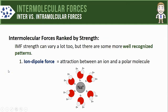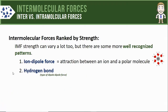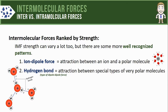Ion-dipole force is the attraction between an ion — like the Na⁺ cation shown here — and polar molecules, like the polar water molecules surrounding it. Next strongest, we have hydrogen bonds. Hydrogen bonds are actually a subcategory of another type of intermolecular force called a dipole-dipole force. They get their own special title because these are attractions between very special types of extremely polar molecules. When water molecules attach to each other, it's a good example of hydrogen bonding.